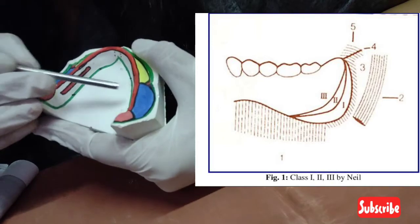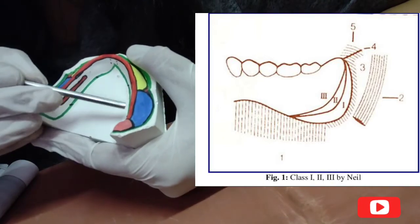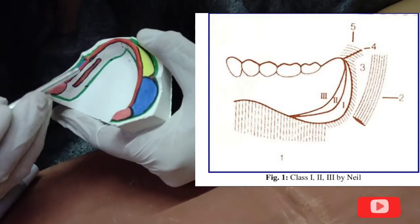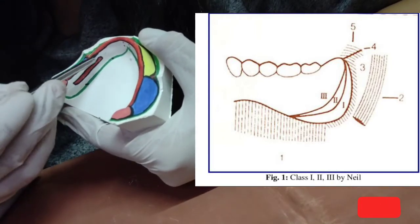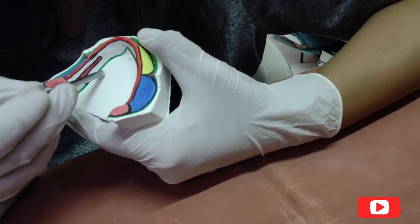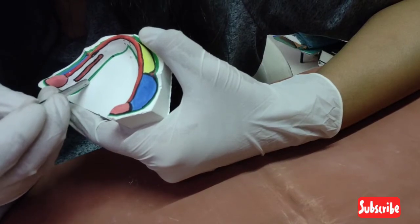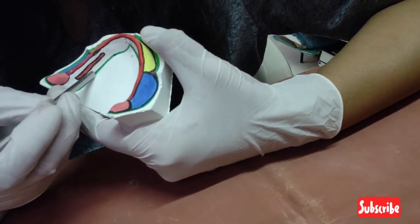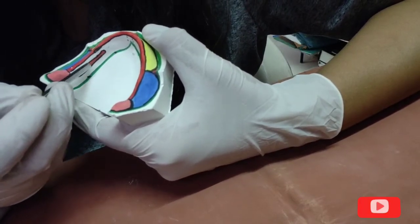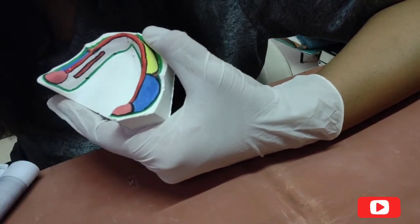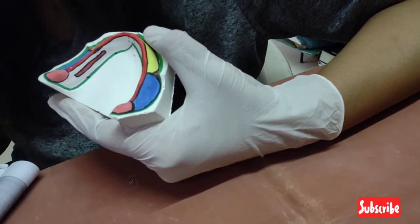The sublingual glands are located above the mylohyoid ridge. Below the mylohyoid ridge is the submandibular fossa and submandibular gland, while above the mylohyoid ridge is the sublingual gland.